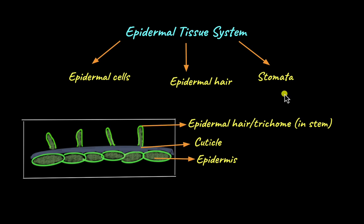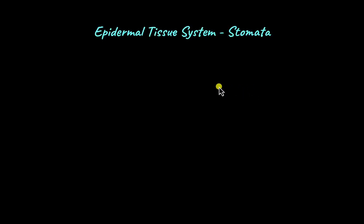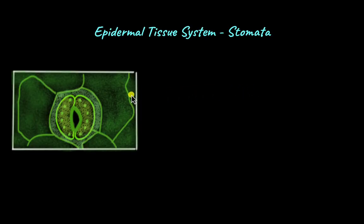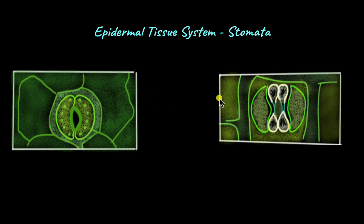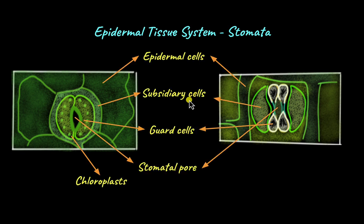Stomata are the structures through which gas exchange takes place. Gas exchange is the entry of carbon dioxide into the plant and exit of oxygen from the plant, and it is needed for photosynthesis. There are two types of stomata — one that looks something like this under the microscope, and one that looks like this under the microscope.